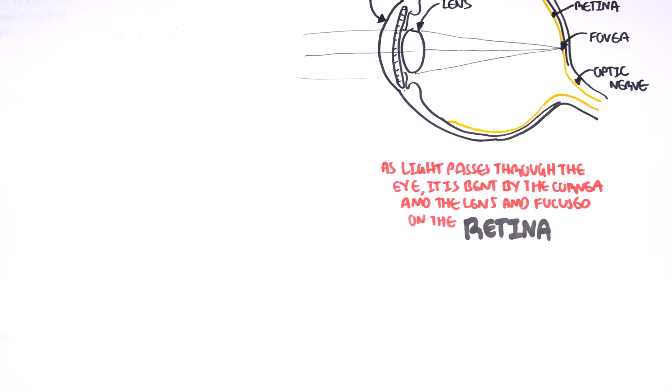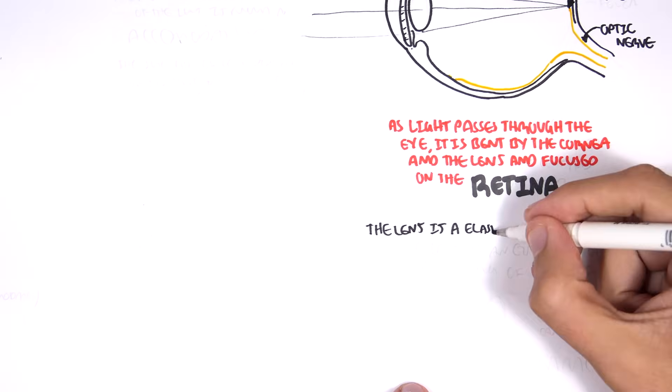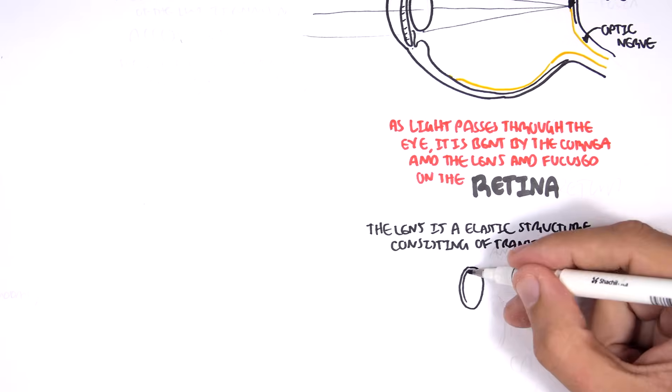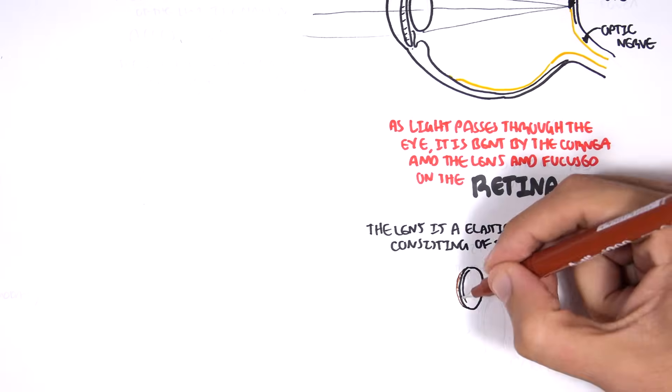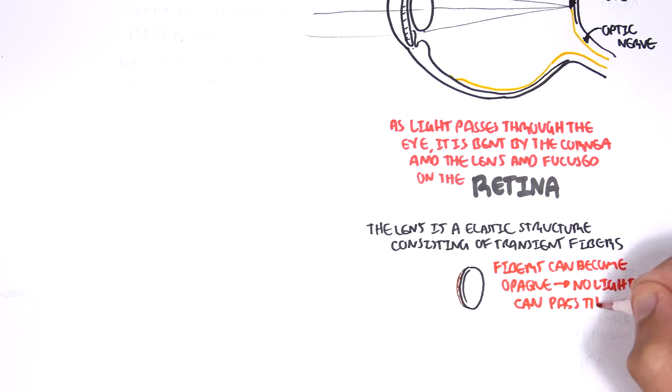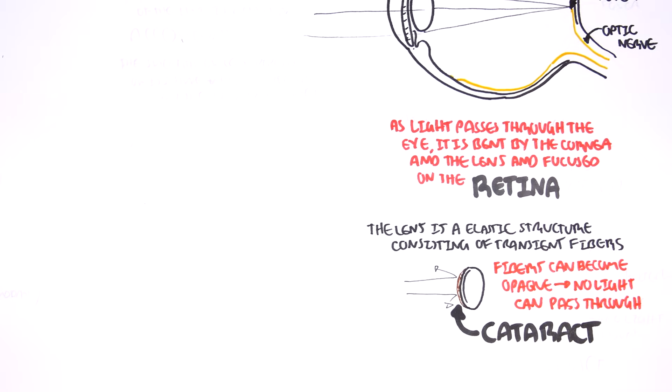The lens is an elastic structure consisting of transparent fibers. But things can happen to the lens. The fibers of the lens can become opaque, which can result in no light entering the eye. This condition of the lens becoming opaque is called cataract.